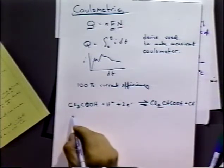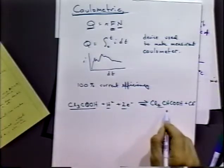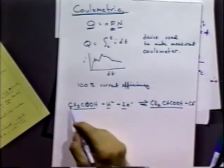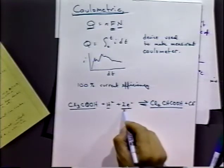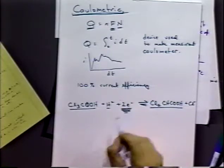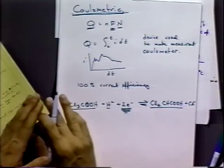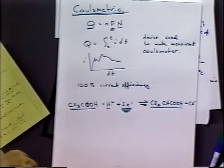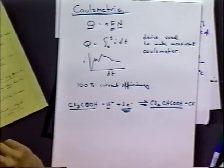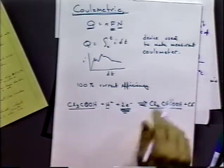You can use coulometry not only to determine the amount of material that's initially present, but also to determine the number of electrons in the system. Given the initial starting amount of material, you can determine the number of electrons you've added to the system. That's often something that's not obvious from the system.